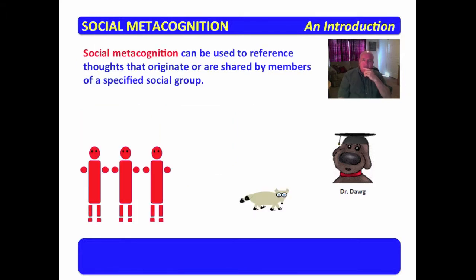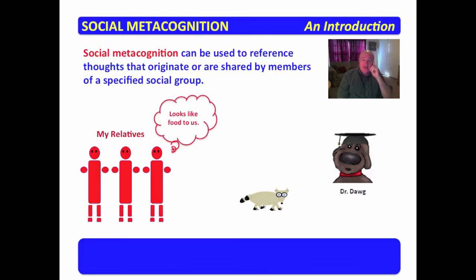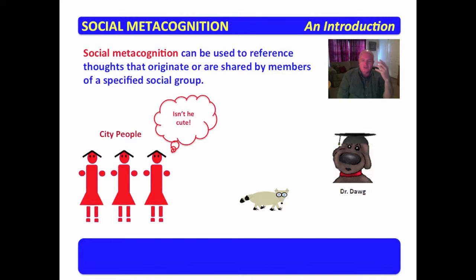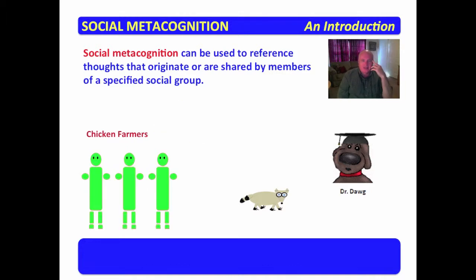Social metacognition can be used to reference thoughts that originate or are shared by members of a specified social group. For example, my relatives in East Texas see a raccoon and say it looks like food — what good barbecue. A group of city people might see the raccoon and say isn't he cute, because their shared thought is of a cute little zoo animal. A group of chicken farmers might say what a pest. All of these groups looked at an object and had thoughts shared by their specified social group.